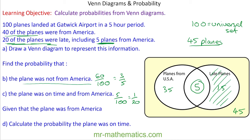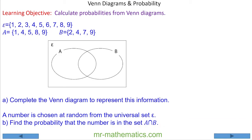Given that the plane was from America, calculate the probability that the plane was on time. Pause the video and resume when ready. Given that the plane was from America, this changes our sample size to 40 planes, because 40 planes were from America. On time means they could not have been late, so that would be the 35 planes that were on time from America — but wait, that gives 35 out of 40, which is 7 over 8.